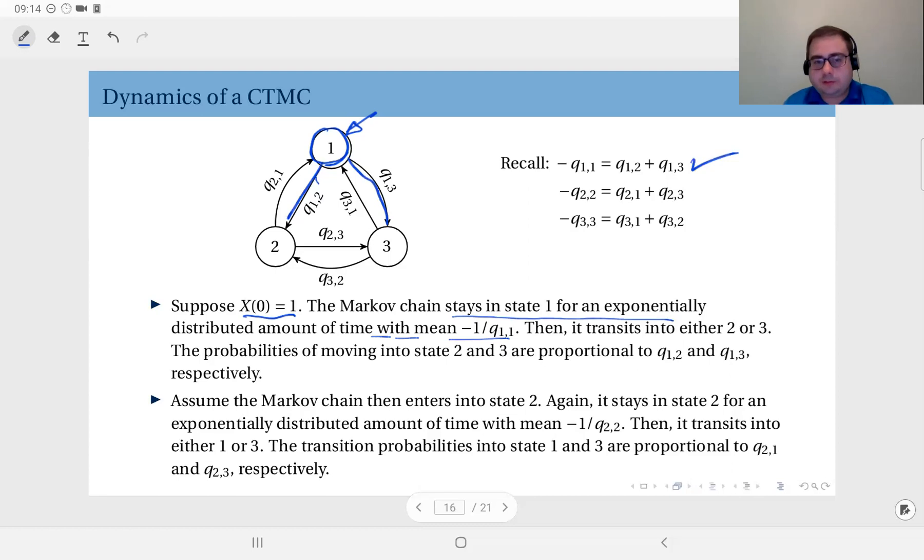Then of course, when it exits 1, there is no coming back. There are no loops here. In contrast to discrete time Markov chains, we do not have self-transitions. It doesn't make sense. But when you exit state 1, you will go to either state 2 or state 3. Which one? The rates will determine that. Now you see, I have Q 1 2 and Q 1 3.